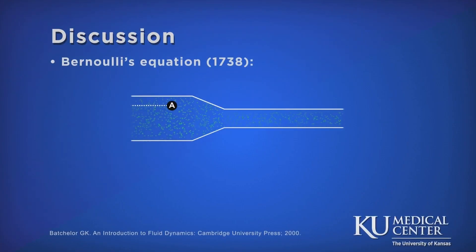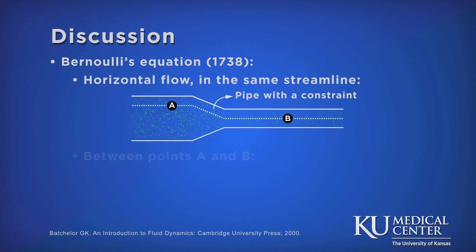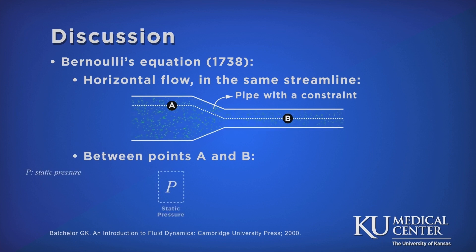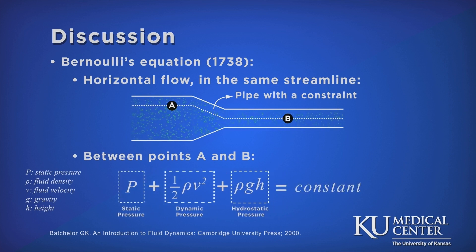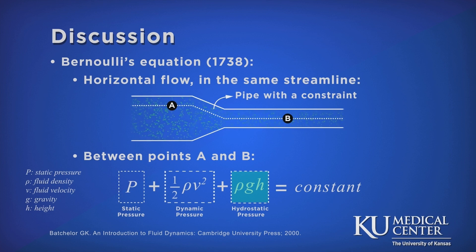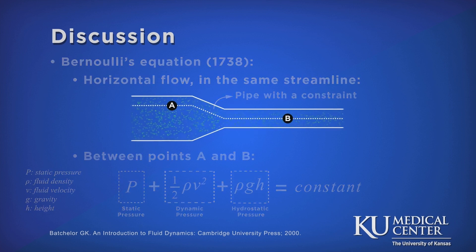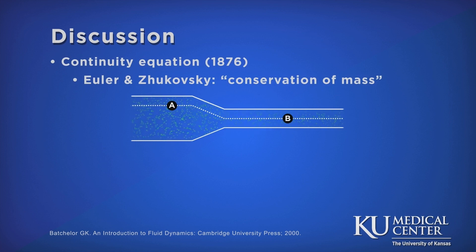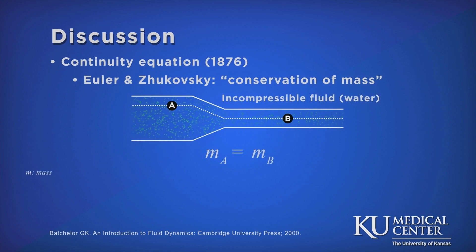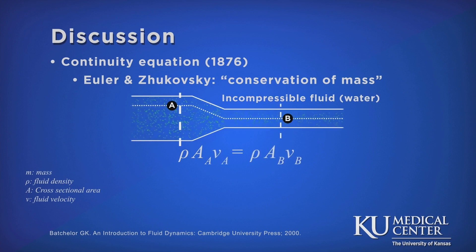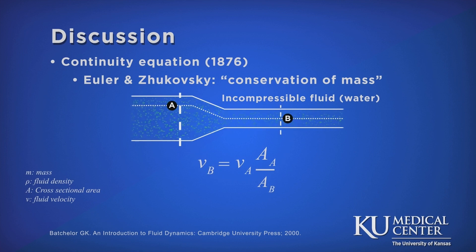To fully comprehend the Vortex Effect, we need to go back to 1738. Consider a horizontal flow inside a pipe with a constraint. To study the pressure between points A and B, Bernoulli stated the sum of the static pressure, the dynamic pressure, and the hydrostatic pressure remain constant. The static pressure expresses the intrinsic pressure of the fluid. The dynamic component contains the pressure exerted by the fluid's speed, and the hydrostatic component comprises the pressure exerted by the fluid due to gravity. We also have the continuity equation: assuming that the fluid is incompressible, like water, mass between both points is equal. Mass flow rate can be expressed as the product of the fluid density, the pipe cross-sectional area, and the fluid speed. Rearranging the terms, this means that the fluid speed increases as it passes to smaller cross-sectional areas.